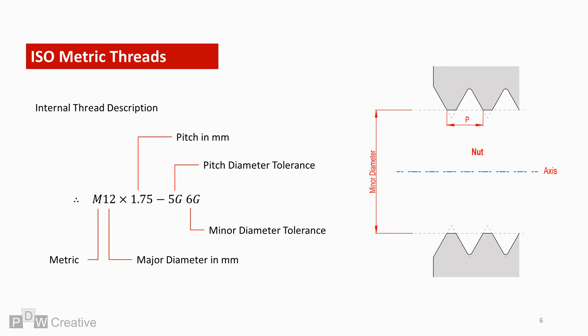The second letter and number combination for internal threads focuses on the minor diameter rather than the major diameter.